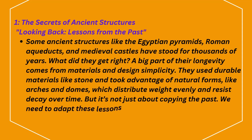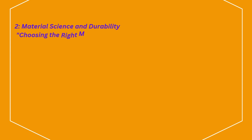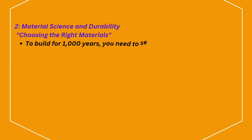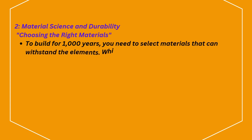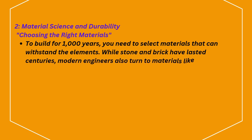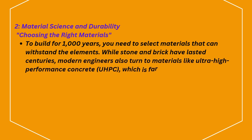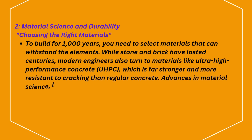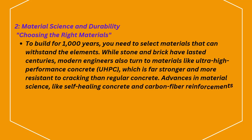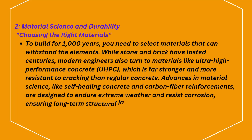But it's not just about copying the past — we need to adapt these lessons for modern times. Material science and durability: to build for 1,000 years, you need to select materials that can withstand the elements. While stone and brick have lasted centuries, modern engineers also turn to materials like ultra-high-performance concrete (UHPC), which is far stronger and more resistant to cracking than regular concrete. Advances in material science, like self-healing concrete and carbon fiber reinforcements, are designed to endure extreme weather and resist corrosion, ensuring long-term structural integrity.